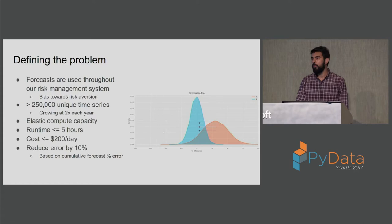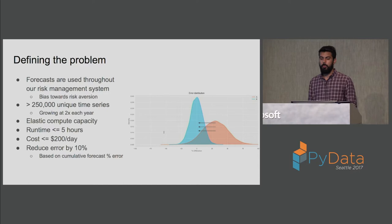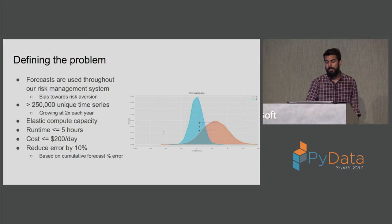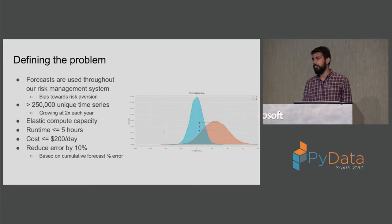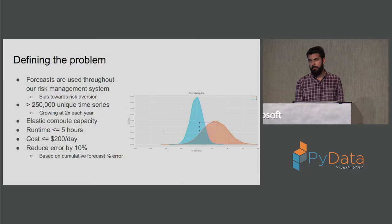The forecasting we do on a daily basis is used throughout our underwriting process. Because of the problem statement we are trying to solve, we are biased towards risk aversion. On a daily basis we do prediction for more than 250,000 unique time series, or what we call accounts, and the data grows at the pace of around 2x every year. The initial goal was to keep the runtime of the complete pipeline under five hours, while optimizing for cost and keeping it under $200 per day, with the aim of reducing forecast error by 10% compared to the current pipeline.